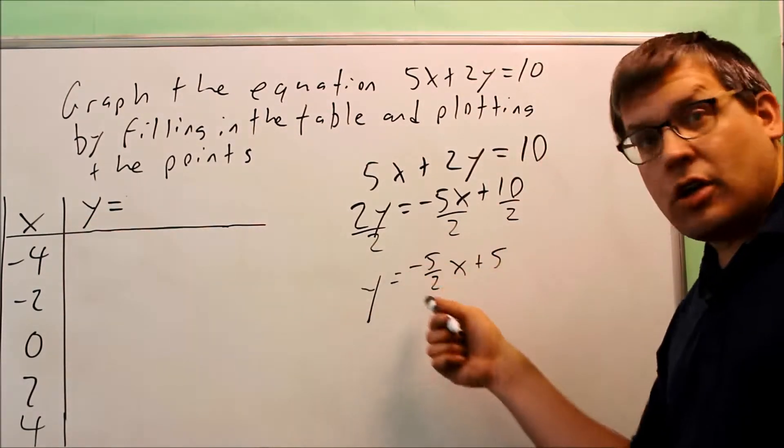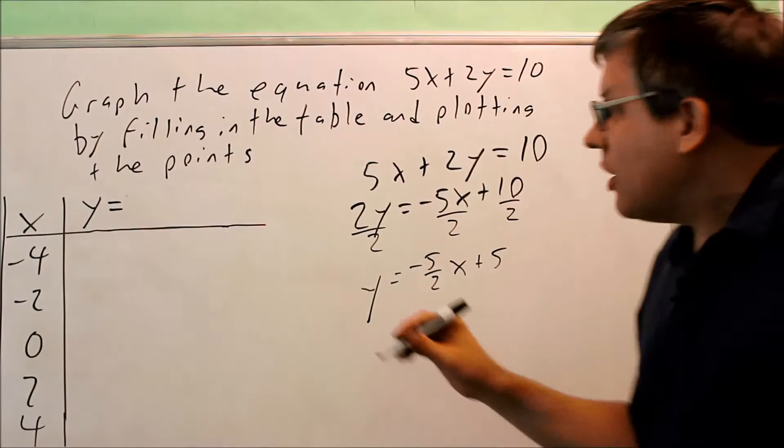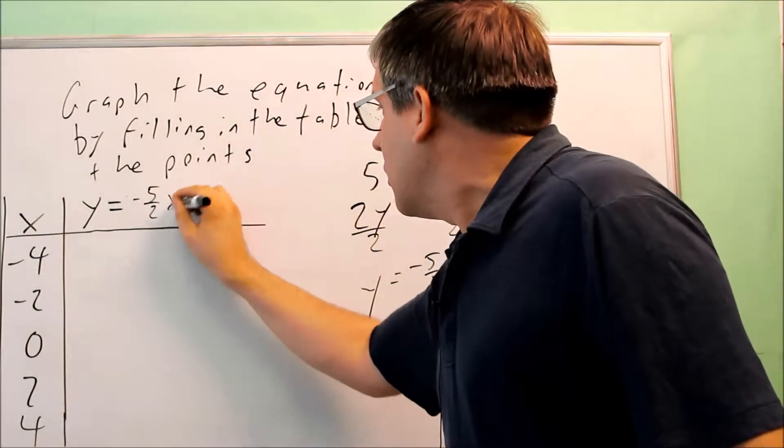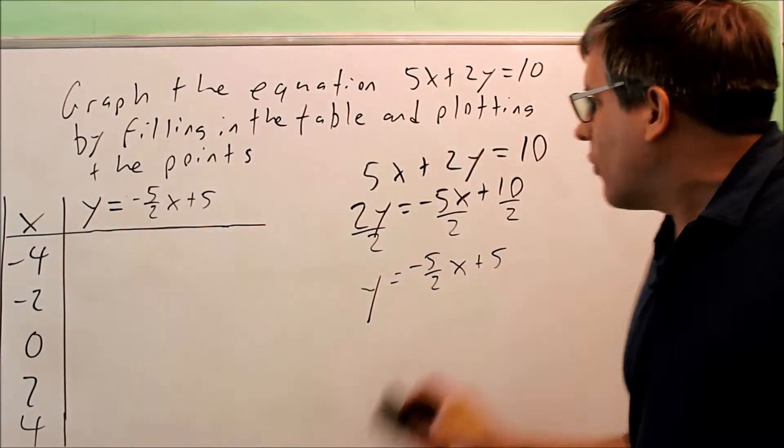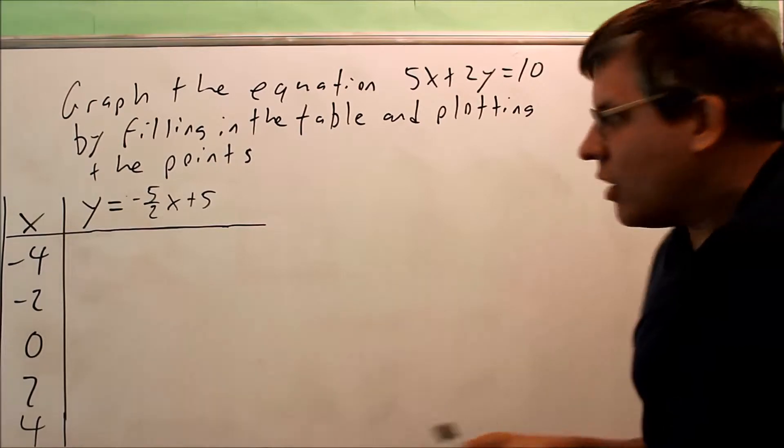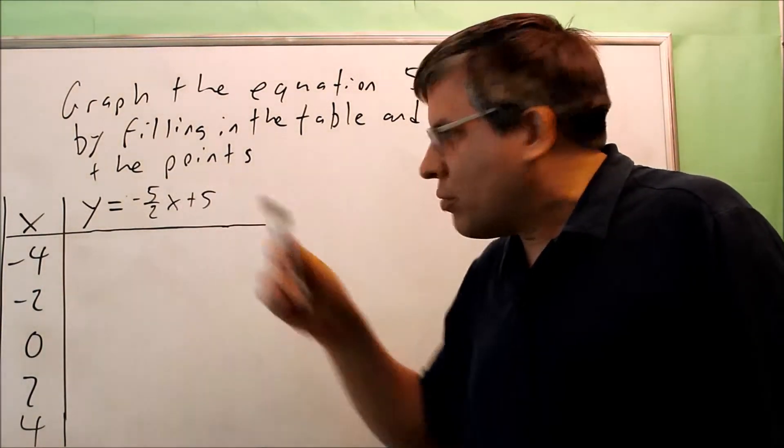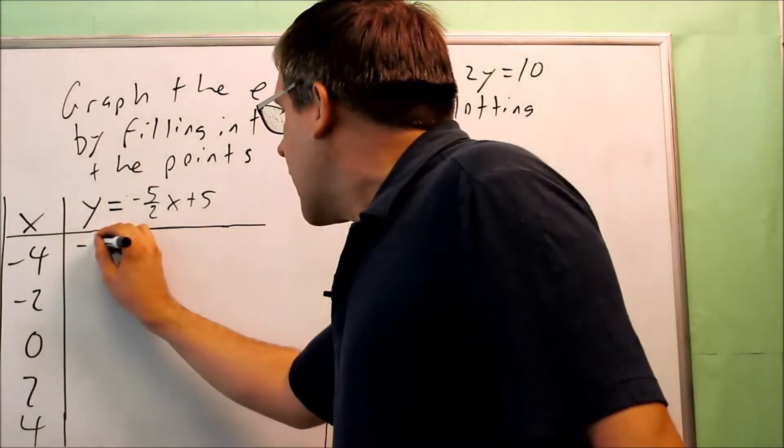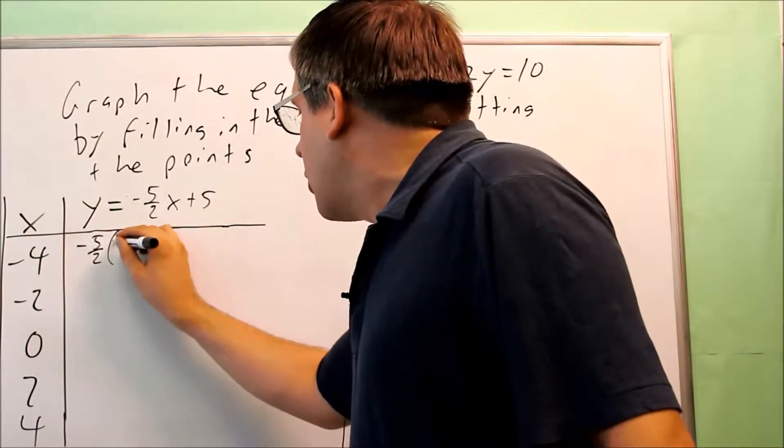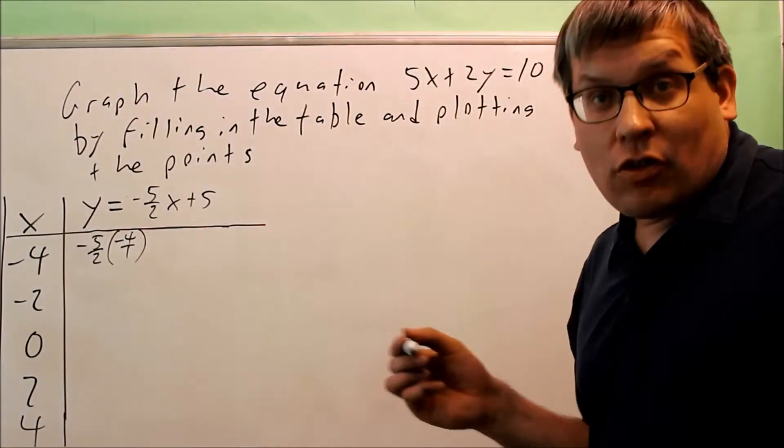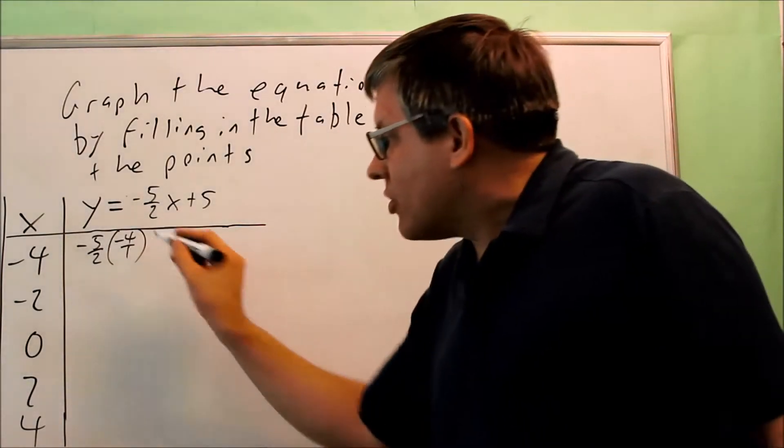All the x values will be going into here and we'll be able to get a set of points that we can plot. Now that we have that complete, we're going to start filling in the table. To do that, we're going to put negative 4 in place of x in this equation right here. So we get negative 5 halves and I'm going to write the negative 4 as a fraction. I'm going to write it as negative 4 over 1 to make it easier to multiply.